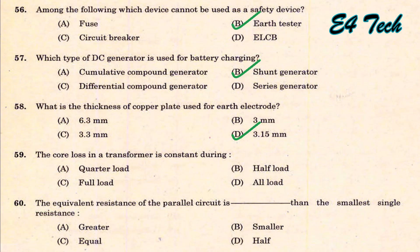The core loss of a transformer is constant at any load — all loads. That is option D.